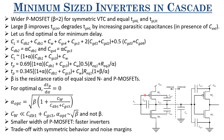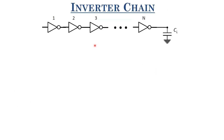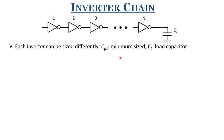Now let us take the case of an inverter chain. We have N inverters driving a load capacitance CL. The constraint is that each inverter can be sized differently - you can have sizing factors S1, S2, S3, etc. The first inverter is a minimum sized inverter with CG1 as its input gate capacitance. The task is to calculate the propagation delay of this inverter chain and find the values of sizing parameters as well as the optimal number of stages N so that propagation delay is minimum.